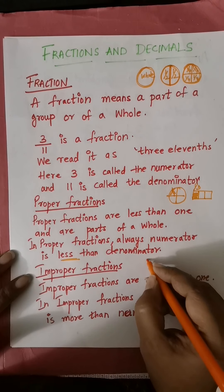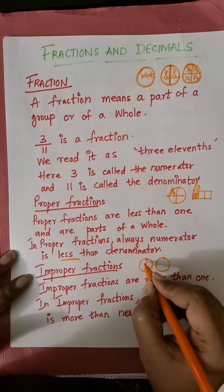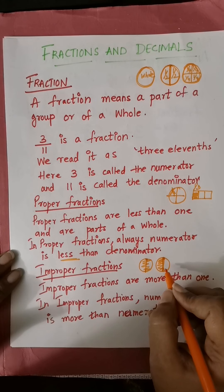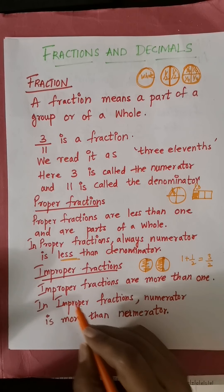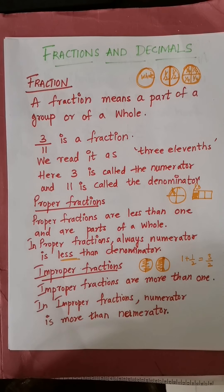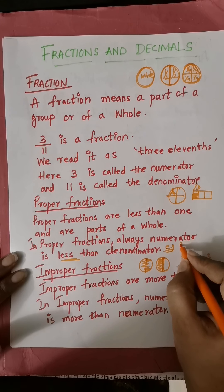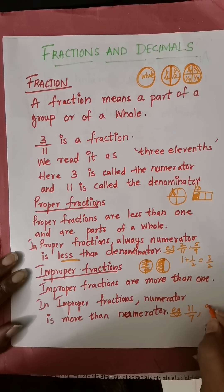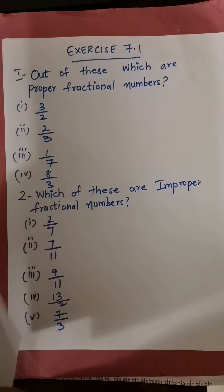Next, what is an improper fraction? Improper fractions are more than 1. Suppose this is 1, and I am taking this whole and half of this — that is 1 and a half — so this is more than 1. 1 plus half is 3 by 2. In an improper fraction, the numerator is more than the denominator. For example, proper fractions: 2 by 11, 5 by 9; improper fractions: 11 by 7, 9 by 2, and so on.